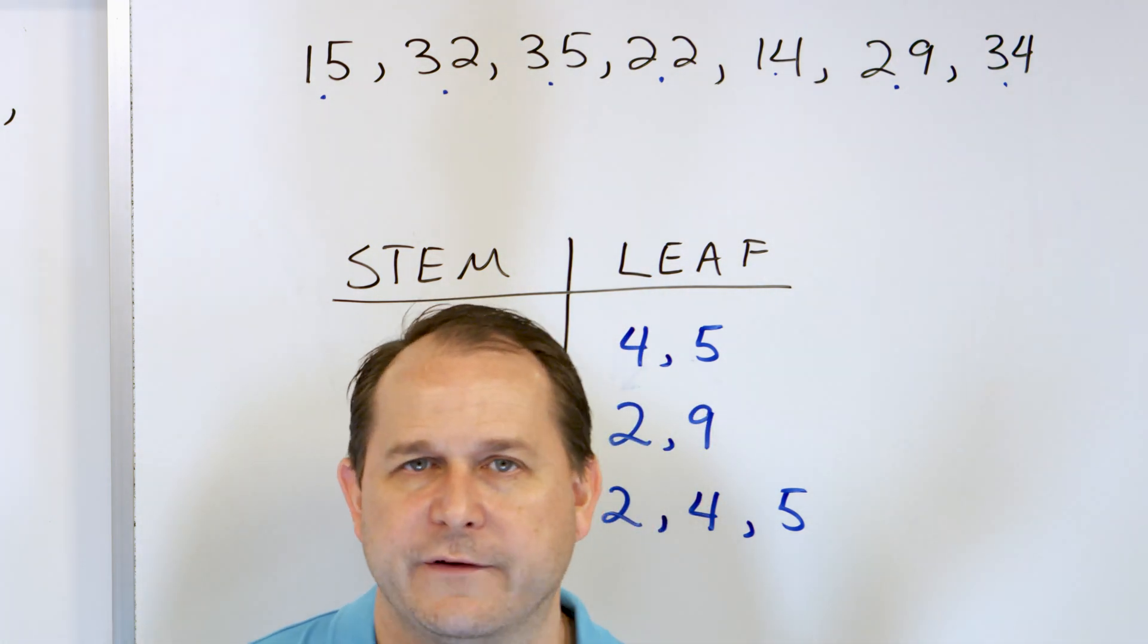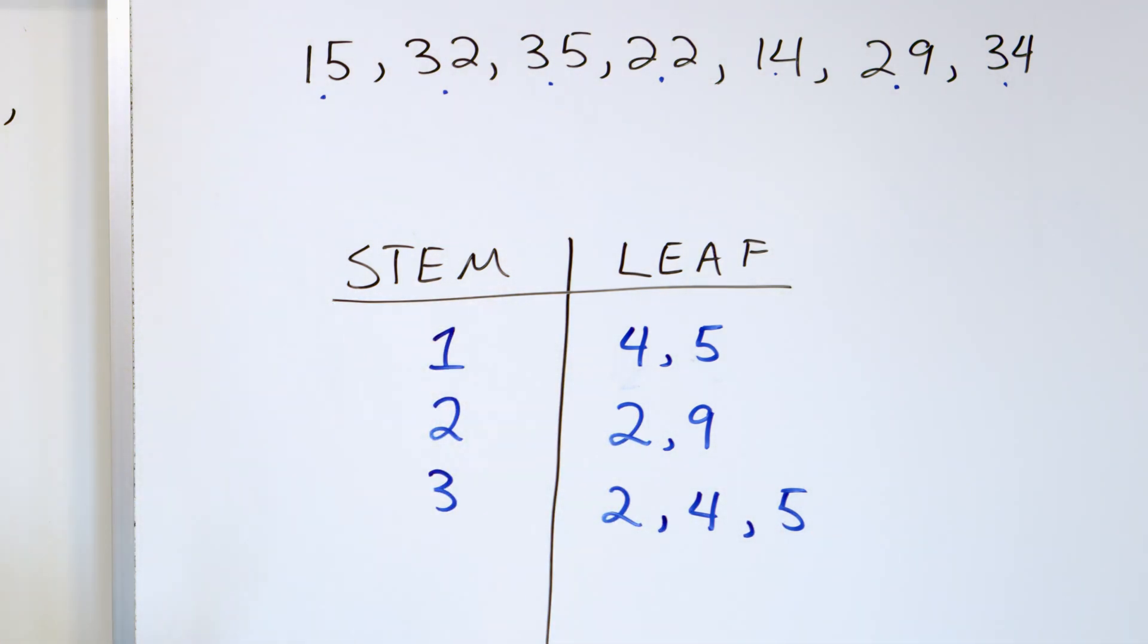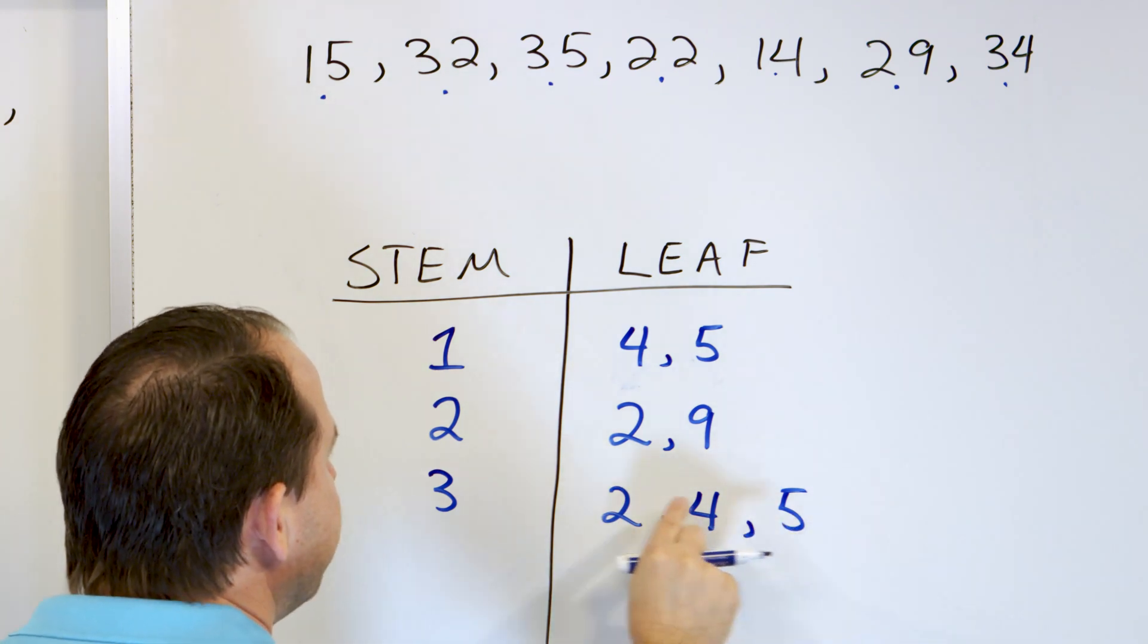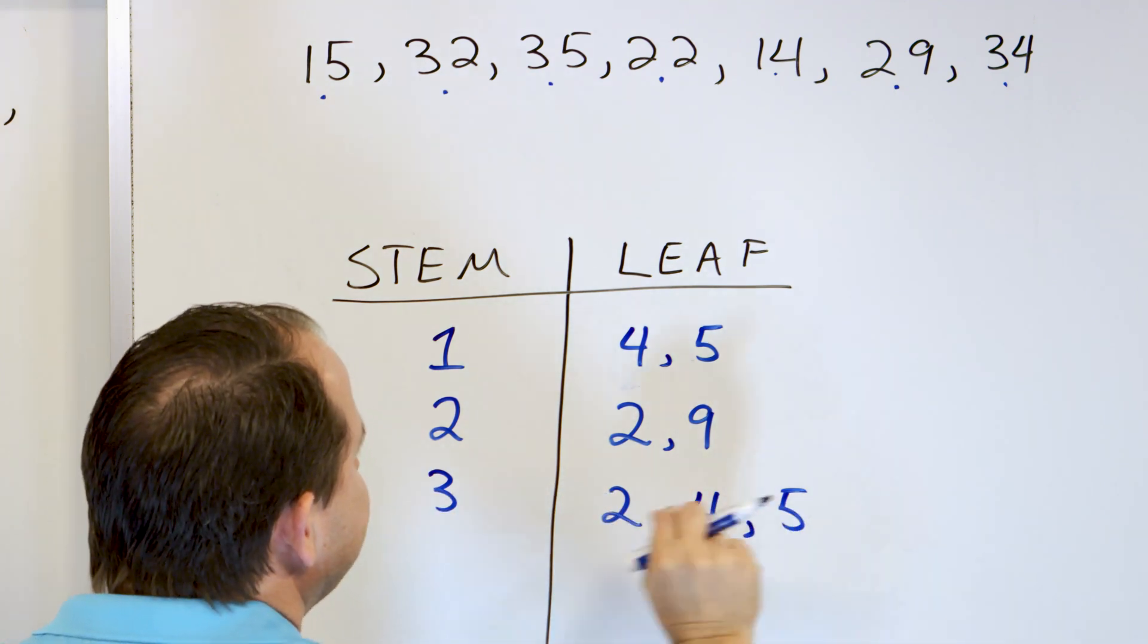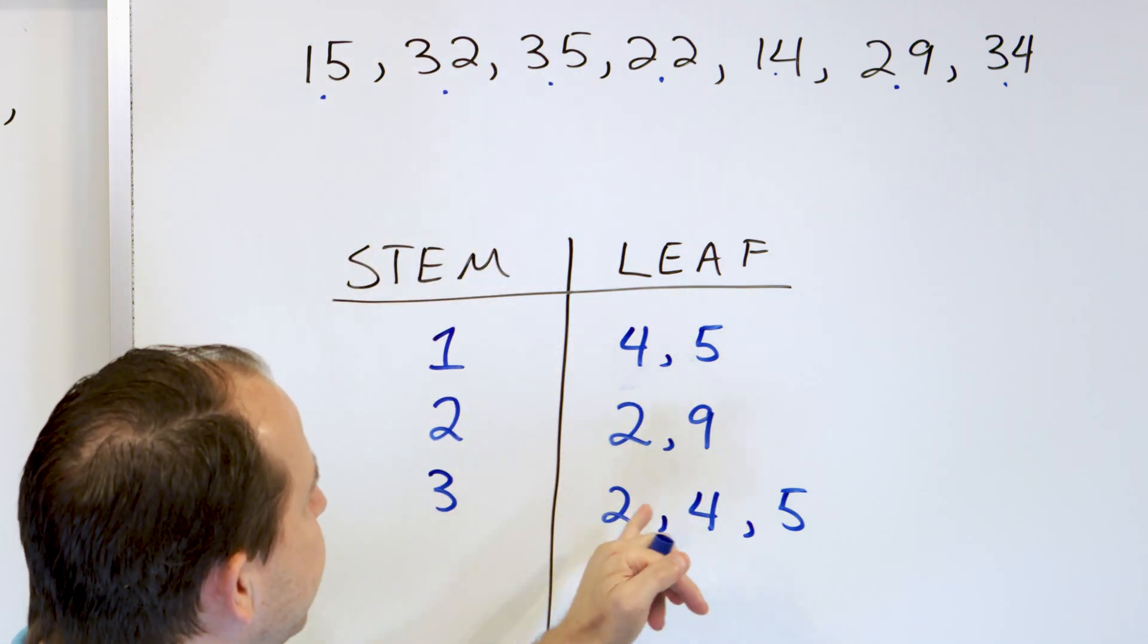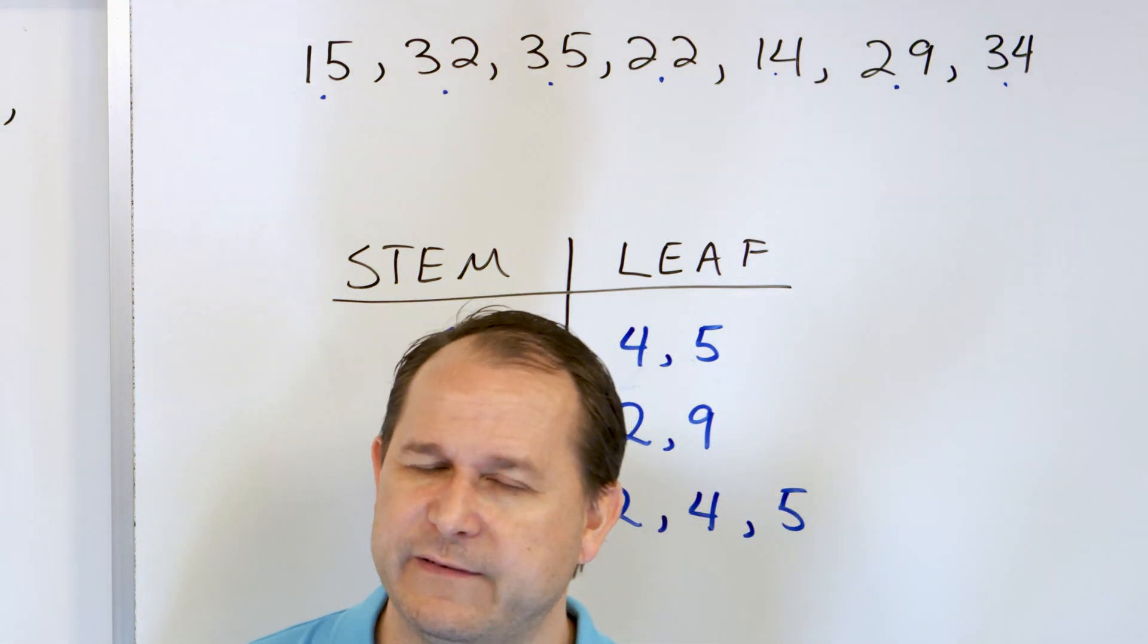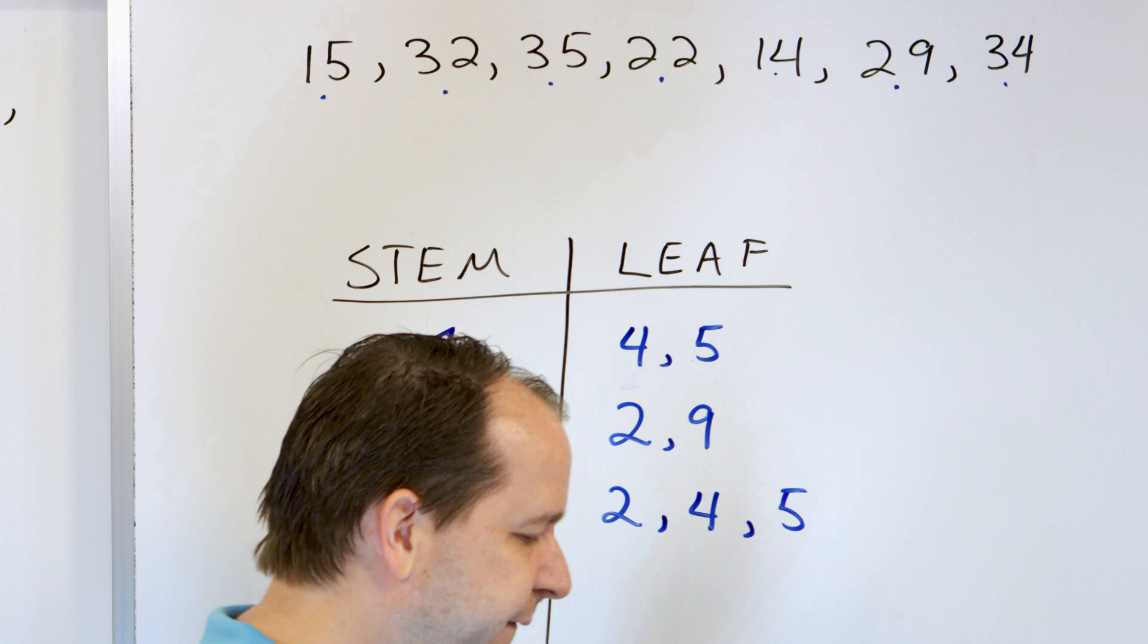And what it tells you is that between 10 going up to 29 here, we have pretty even amounts of data points, but we have a little more clumping in the 30s. So it's easier to look at this chart and see that you have more clumping, more data points in the 30s than it is to look here. But you also have to remember that there's only 7 data points here. So it's not so hard either way. But if I had 100 data points, it would be really hard to look at a list of numbers and see what it was telling you. The table would be vastly superior in showing you the breakdown and the distribution of the different numbers that you have.